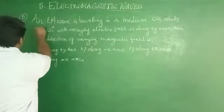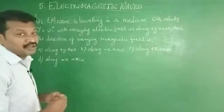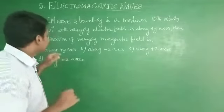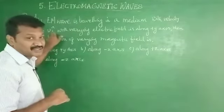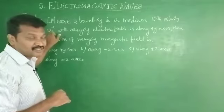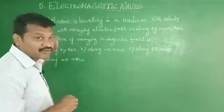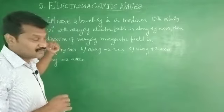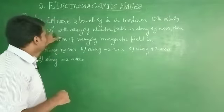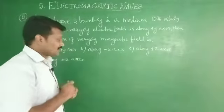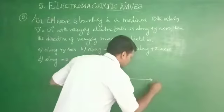V equal to V i cap represents propagation of electromagnetic wave along positive X axis. V i cap represents a unit vector, especially for positive X axis. If you have negative i cap, you have negative X axis. If you have V i cap, that is propagation of electromagnetic wave along positive X axis.